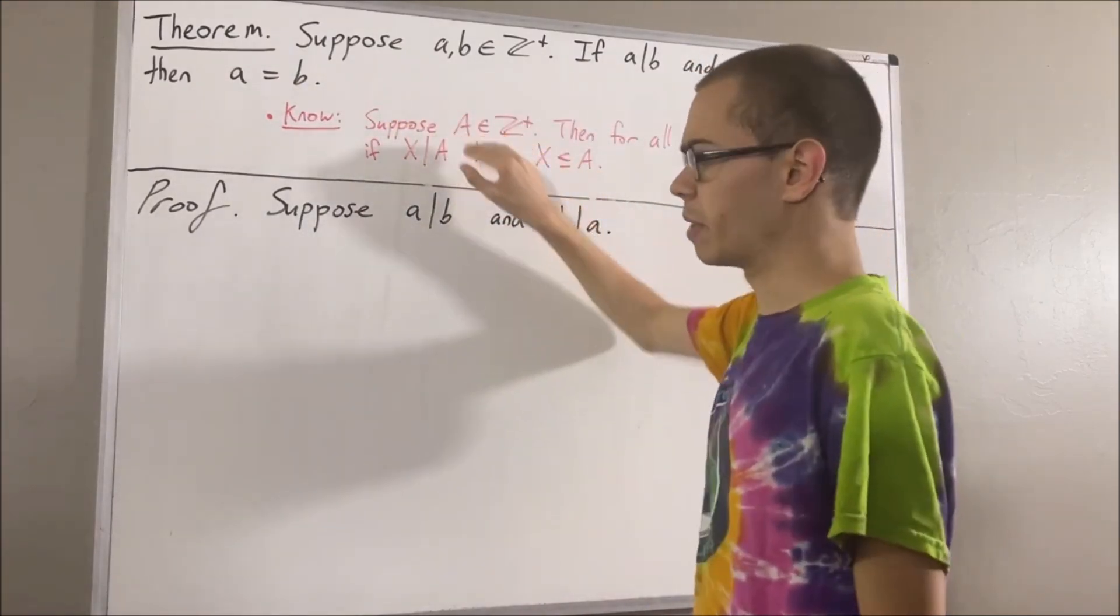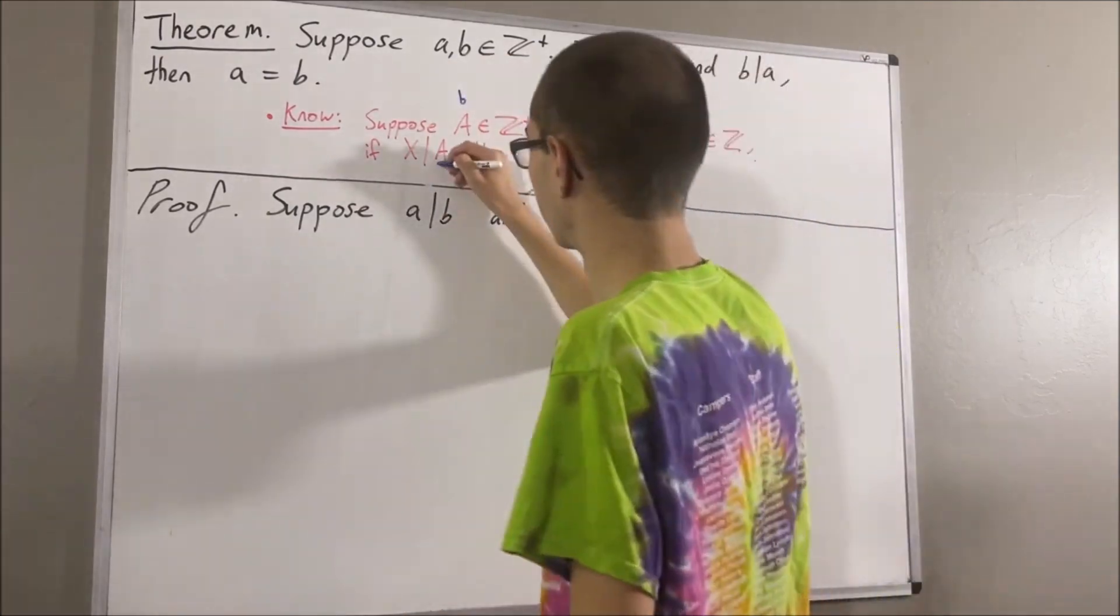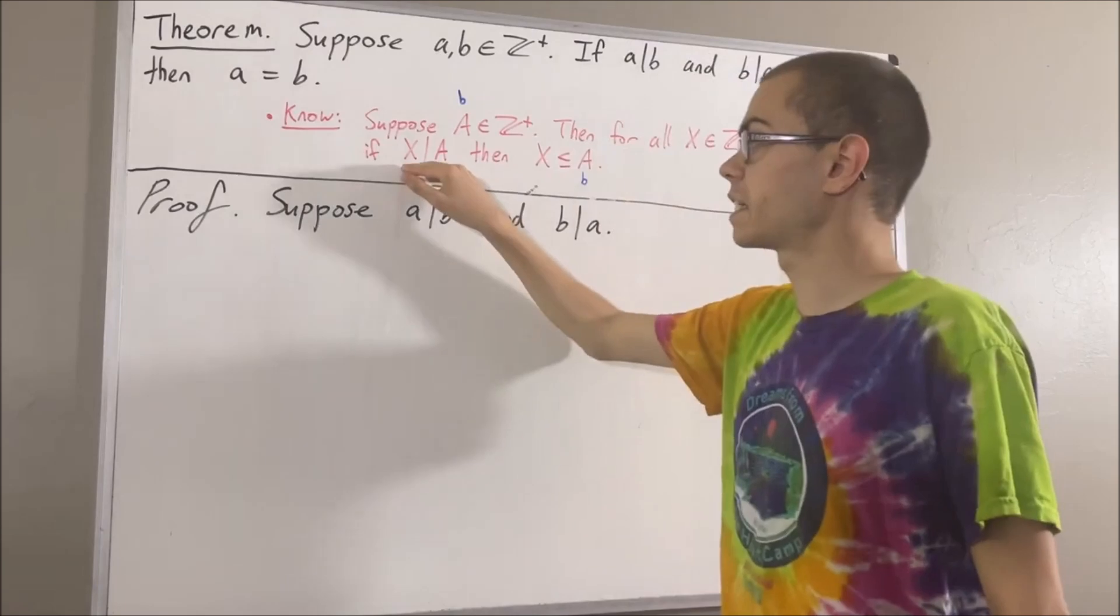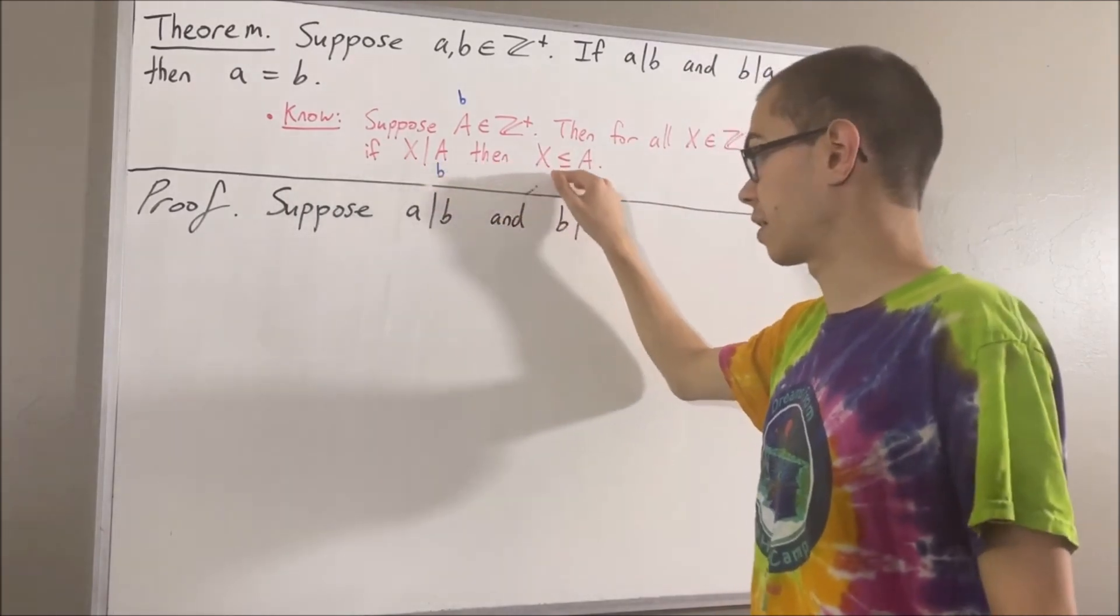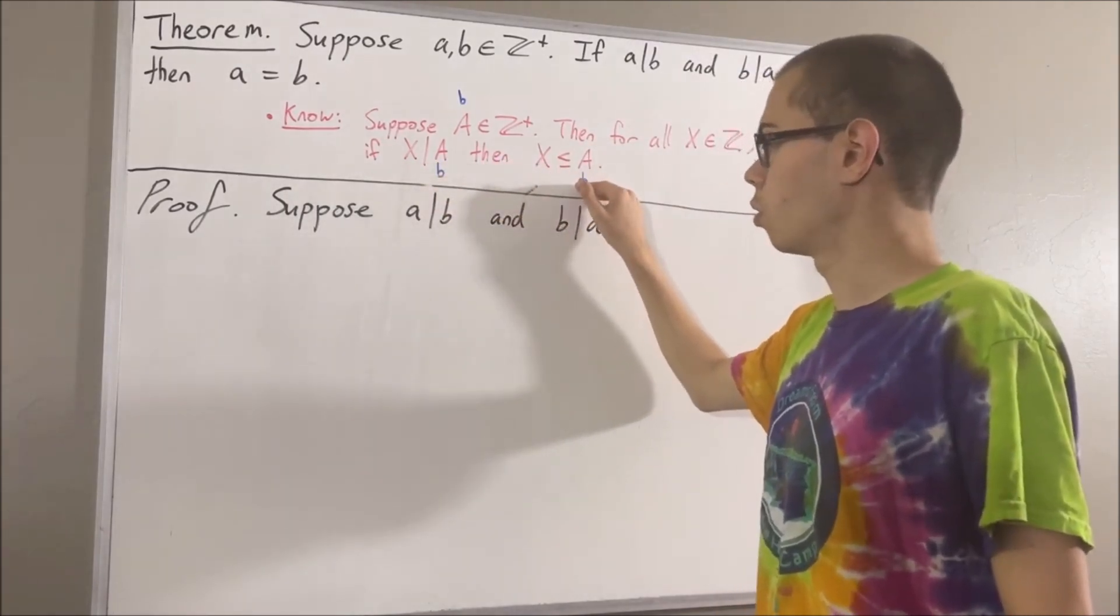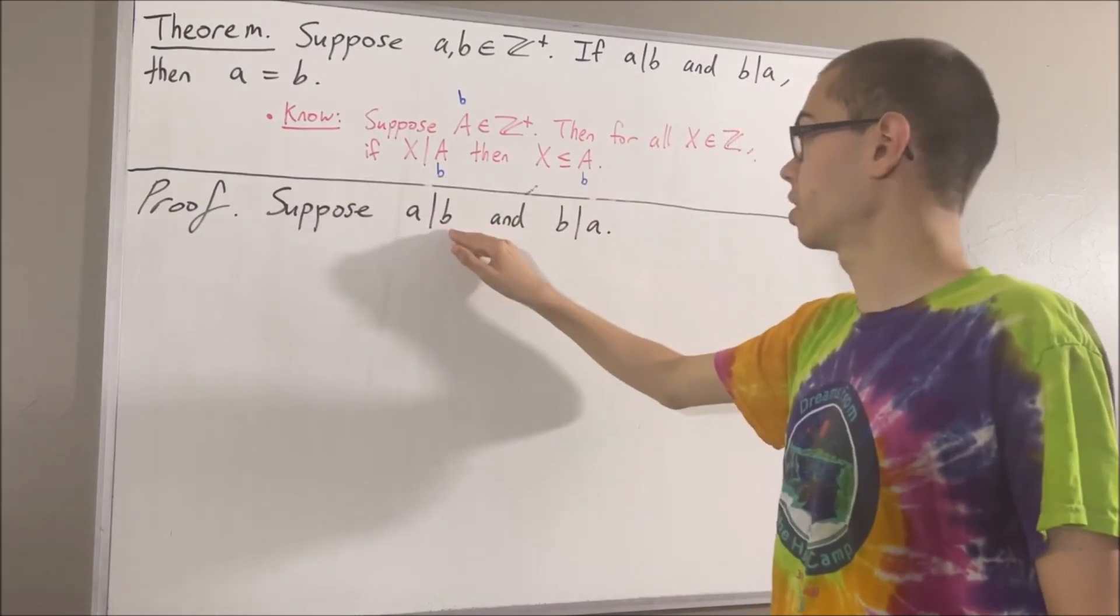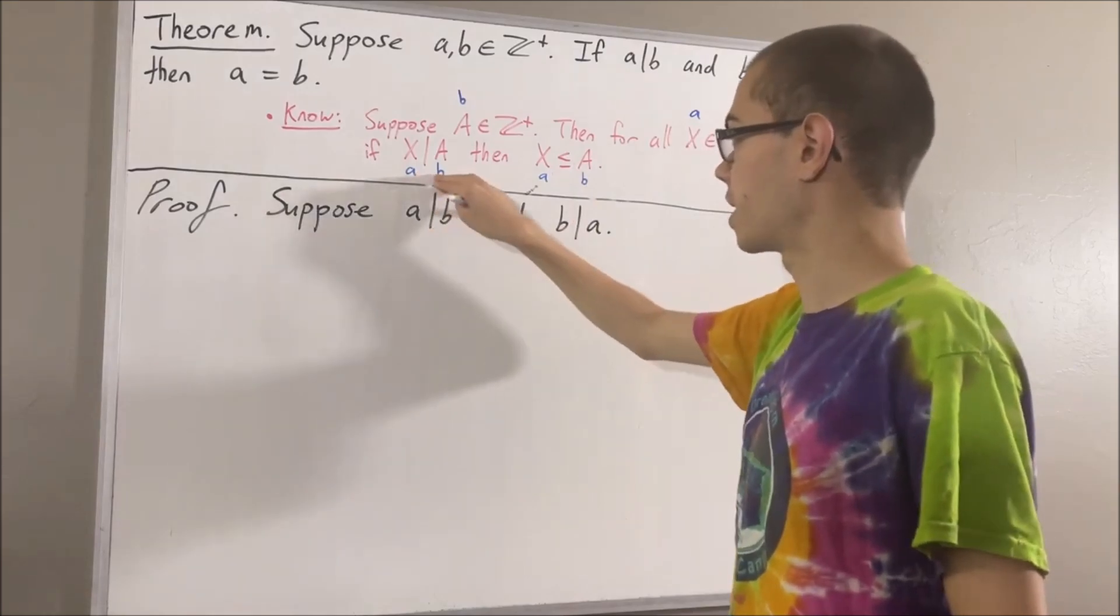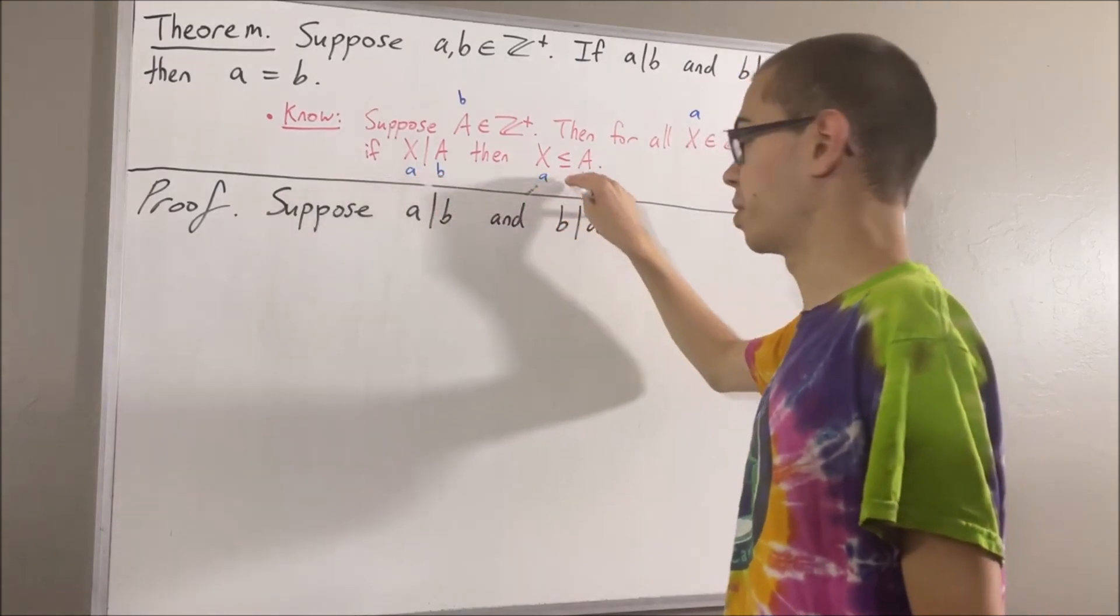We'll take capital A to be B. Well then, we know that for all integers x, if x divides B, then x is less than or equal to B. Well in particular, we know that A divides B, so let's take x to be A. Since A divides B, it follows that A is less than or equal to B.